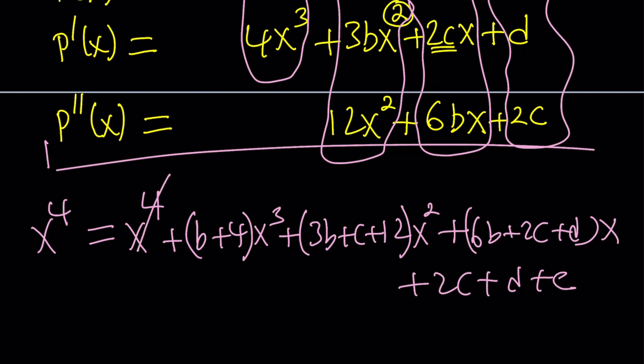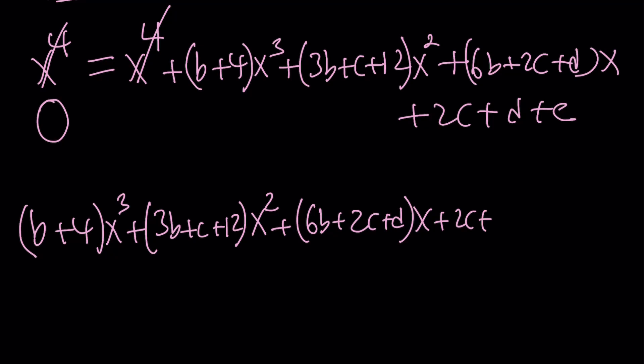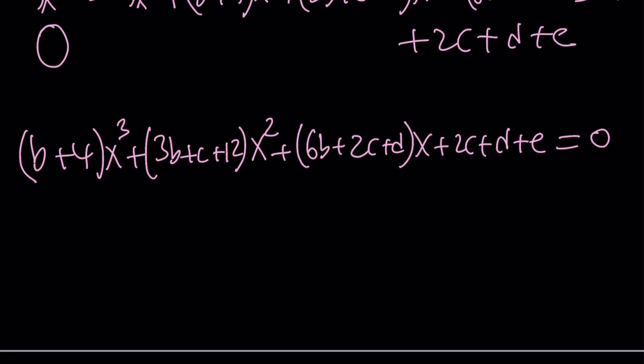Now, notice that everything except for X to the fourth has to cancel out. You can also do the following: Cancel them out and set this equal to zero. Make sense? Let's rewrite it. B plus four times X cubed plus 3B plus C plus 12 times X squared plus 6B plus 2C plus D times X plus 2C plus D plus E, and that's equal to zero. X to the fourth canceled out and now I ended up with a cubic which is equal to zero. Identically zero for all values of X because this is a polynomial. So now all the coefficients must be zero.